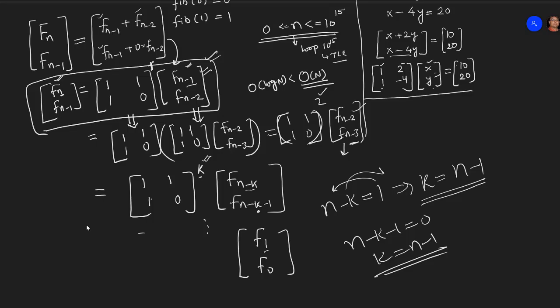That means, the first matrix that we are having, 1, 1, 1, 0. This should be having a power of n minus 1. In order to give us this.